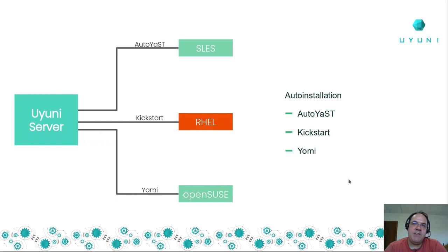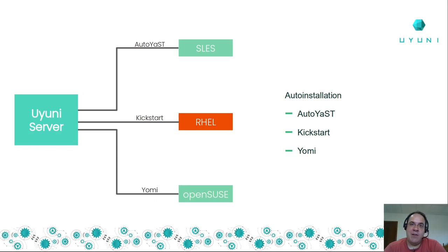A very nice feature of Uyuni is Yomi. If you have ever tried to auto-install systems with Kickstart or AutoYaST, you know this is very complex — those XML files are very tricky to write. Yomi is Salt-based. We provide Yomi formulas so you have a UI where you can, with just point-and-click, define what software you want to auto-install on a system, how to partition the disk, how to network boot — everything. Then you save that and apply it to 300 systems without writing a single XML line.